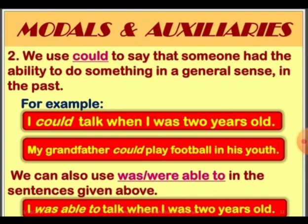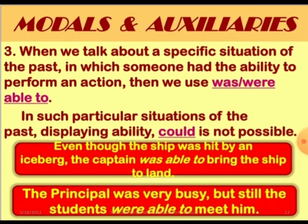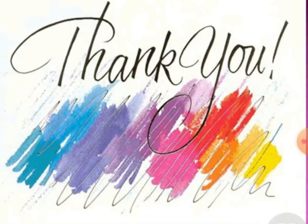We use 'could' to say that someone had the ability to do something in a general sense. For example: I could talk when I was two years old. When we talk about a specific situation in the past in which someone had the ability to perform an action, then we use 'was' or 'were able to.'